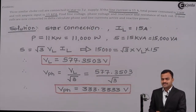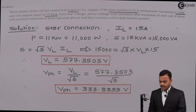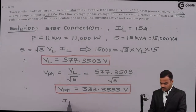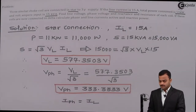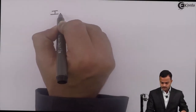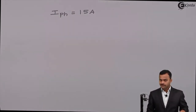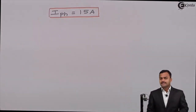We need to find resistance and reactance of each phase, which requires both VPH and IPH. We have VPH. For a star-connected load, phase current equals line current, so IPH = IL = 15 ampere.